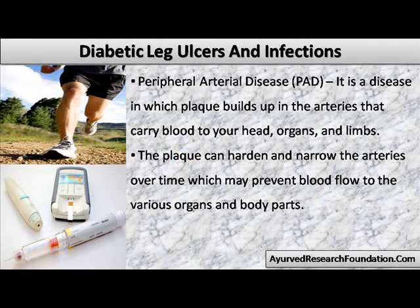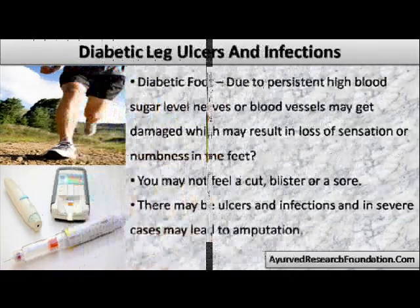Peripheral arterial disease is a disease in which plaque builds up in the arteries that carry blood to your head, organs, and limbs. The plaque can harden and narrow the arteries over time, which may prevent blood flow to the various organs and body parts.